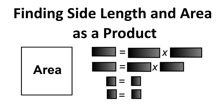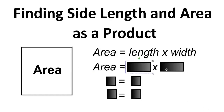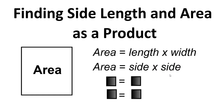Finding side length and area as a product. The formula for area is area equals length times width. Since we're using a square, area is going to be equal to side times side, as the length and width are the same. And this can be written as A equals side squared.